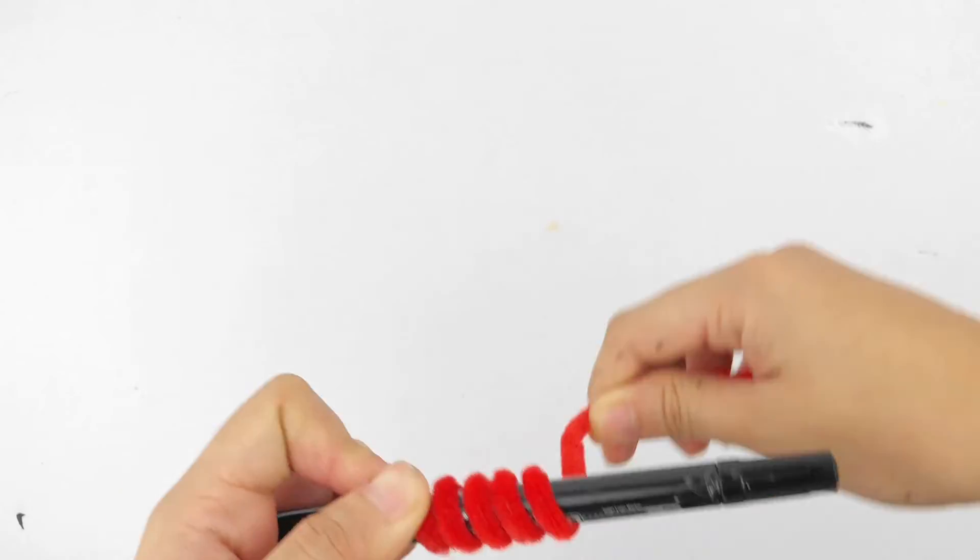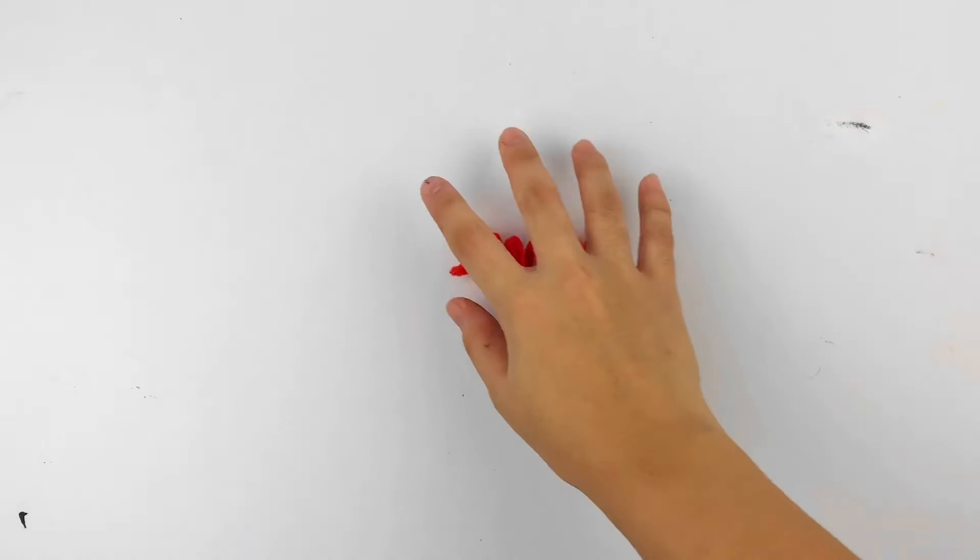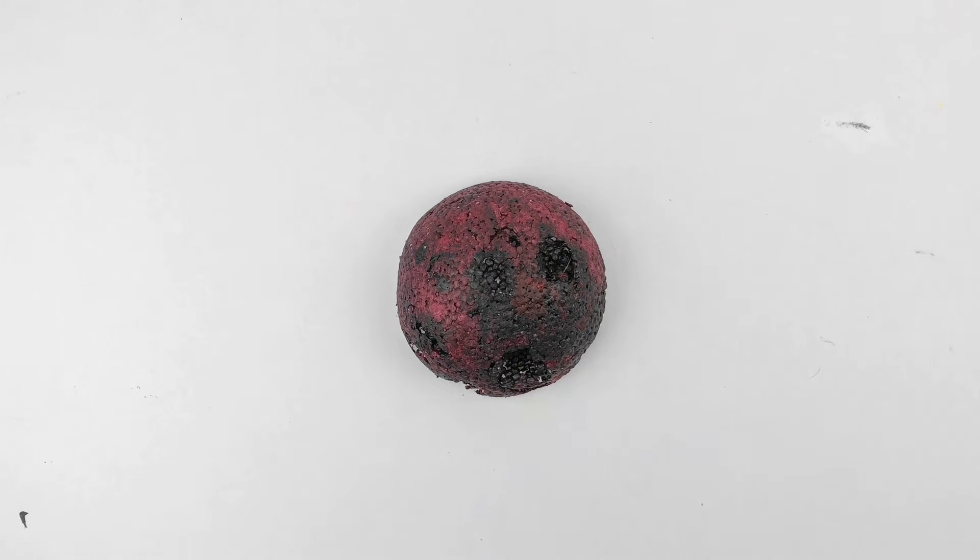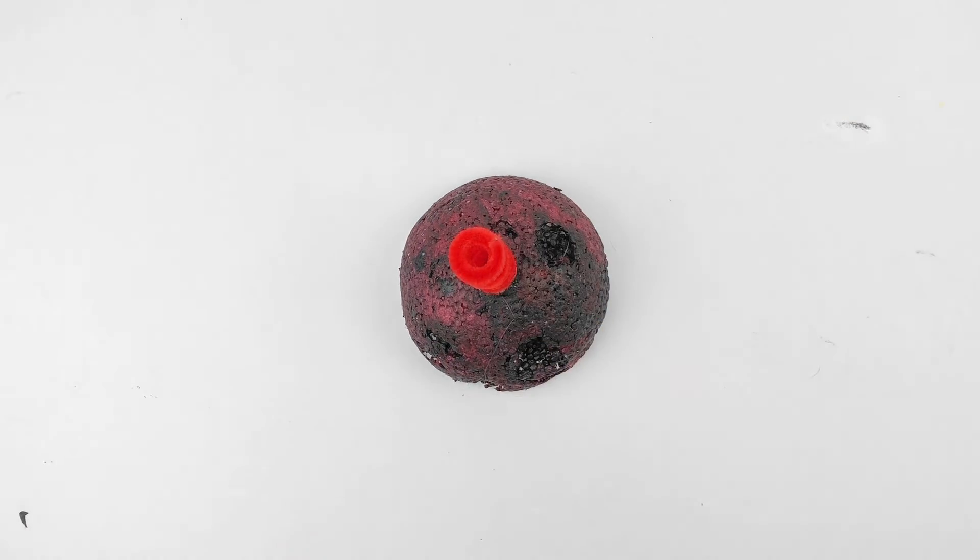Now let's make a spring with a pipe cleaner by wrapping it around a pen so you get that little springy action. Now we're going to be gluing that spring to the styrofoam ball. You do want to use hot glue to attach it so it's nice and secure.